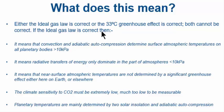Remember, I won a fortune on Trump when he won, so I'm pretty good when I put money on. I get the right answer. It means that convection and adiabatic auto-compression determines surface atmospheric temperatures on planetary bodies over 10 kPa. It means that radiative transfers of energy only dominate in the part of atmospheres less than 10 kPa. So on Earth, that's above the tropopause. It means that near-surface atmospheric temperatures are not determined by a significant greenhouse effect, either here on Earth or elsewhere. Venus, that's what I'm talking about. Venus. Where's the greenhouse effect?